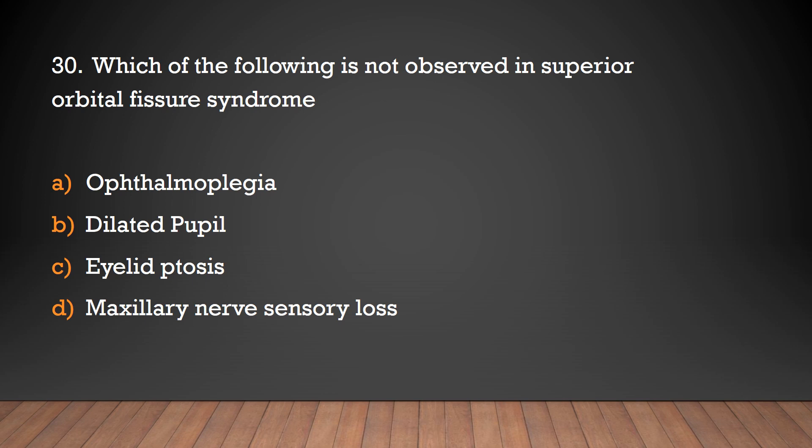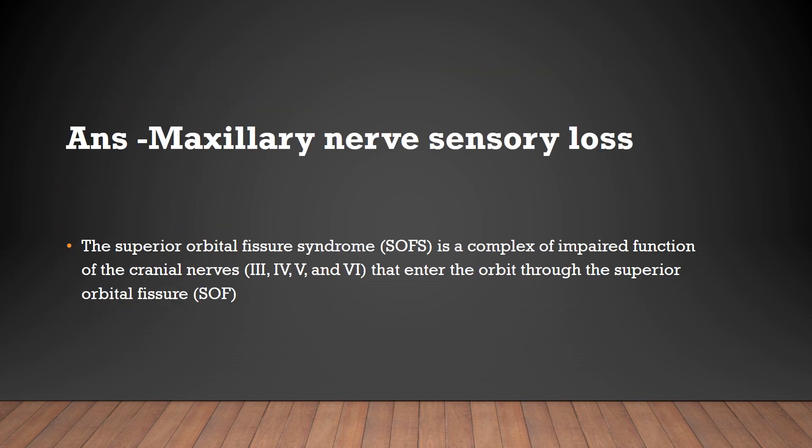Which of the following is not observed in superior orbital fissure syndrome: ophthalmoplegia, dilated pupil, eyelid ptosis, or maxillary nerve sensory loss? The answer is maxillary nerve sensory loss. Superior orbital fissure syndrome involves impaired function of cranial nerves 3, 4, 5, and 6 that enter the orbit through the superior orbital fissure.